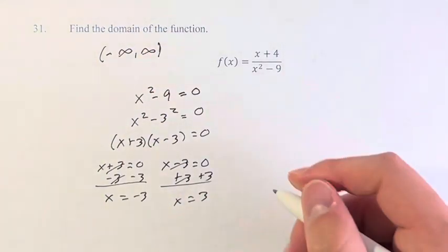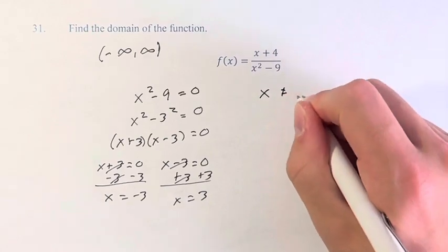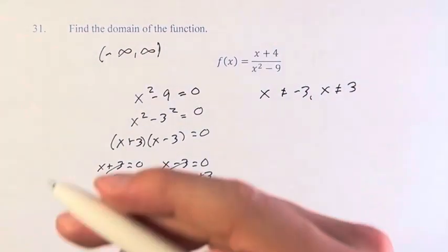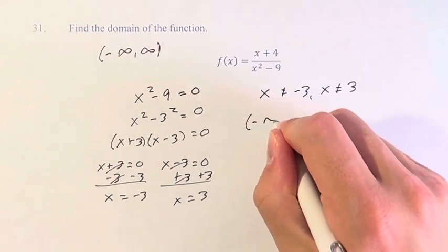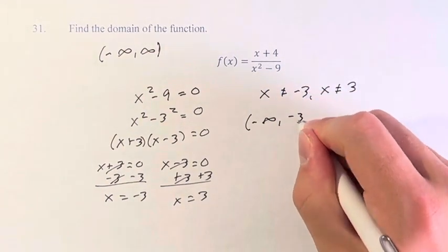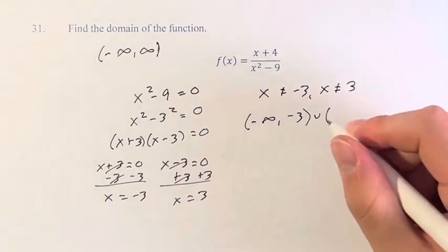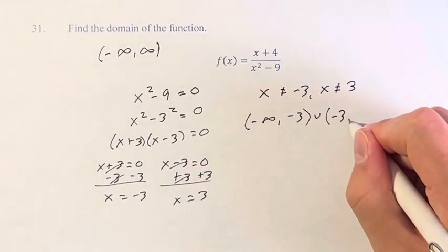So we can write this as x cannot equal negative 3, x cannot equal positive 3. Or, in the interval form, like I had it up above, negative infinity up to negative 3, with an open bracket because we can't include negative 3. Then the space in between these, from negative 3 to 3,